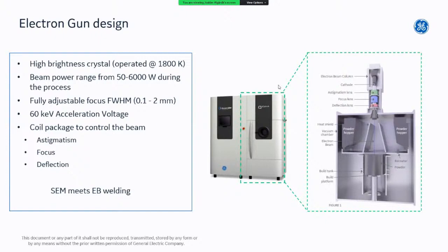The EBM system is fully adjustable in terms of focus — or full-width half-maximum — which can also be referred to as spot size. To control the beam, the technology uses a coil package consisting of electromagnetic lenses, meaning there are no moving parts. Electromagnetic fields control the beam, allowing it to be moved very rapidly. We usually say EBM is where scanning electron microscopy meets electron beam welding.